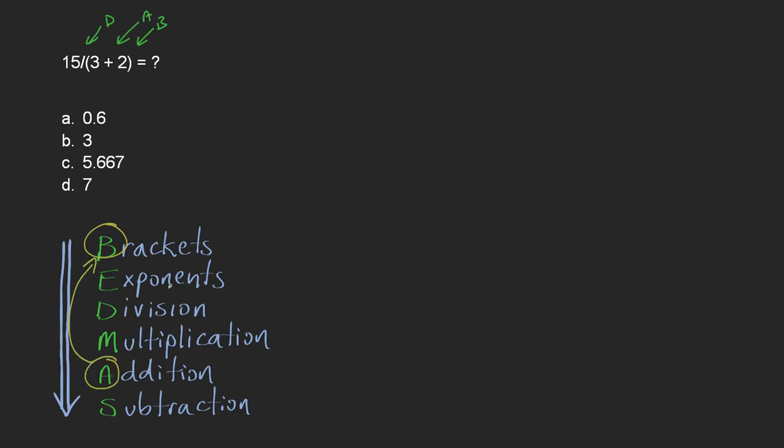So let's have a look and see how this plays out. Now 15 divided by 3 plus 2 is the same as writing it like this: 15 over in brackets 3 plus 2. And we have to deal with the brackets first.